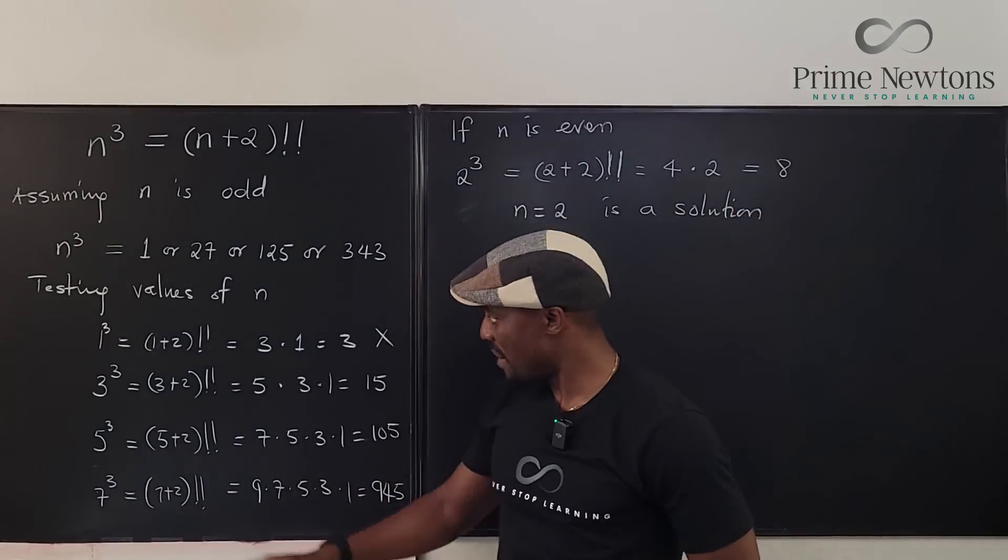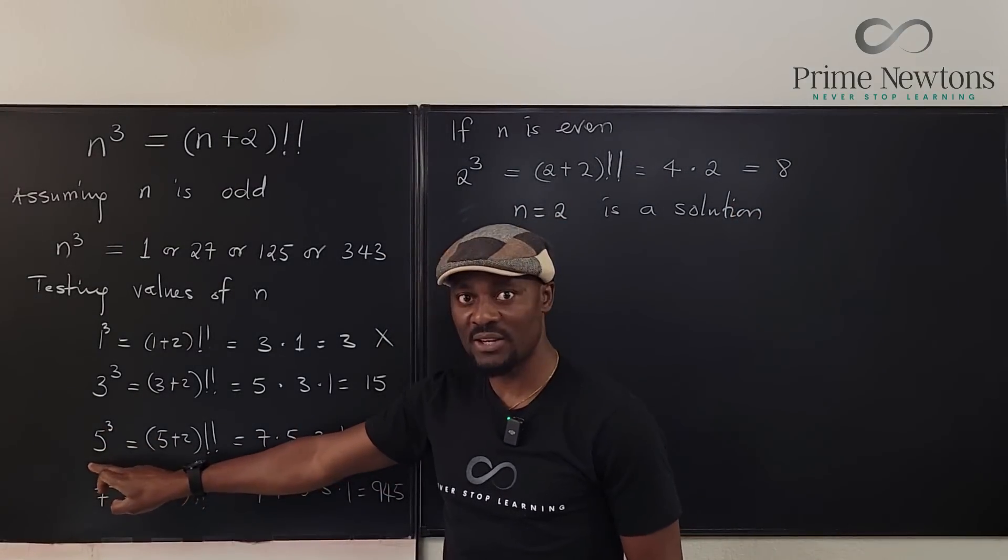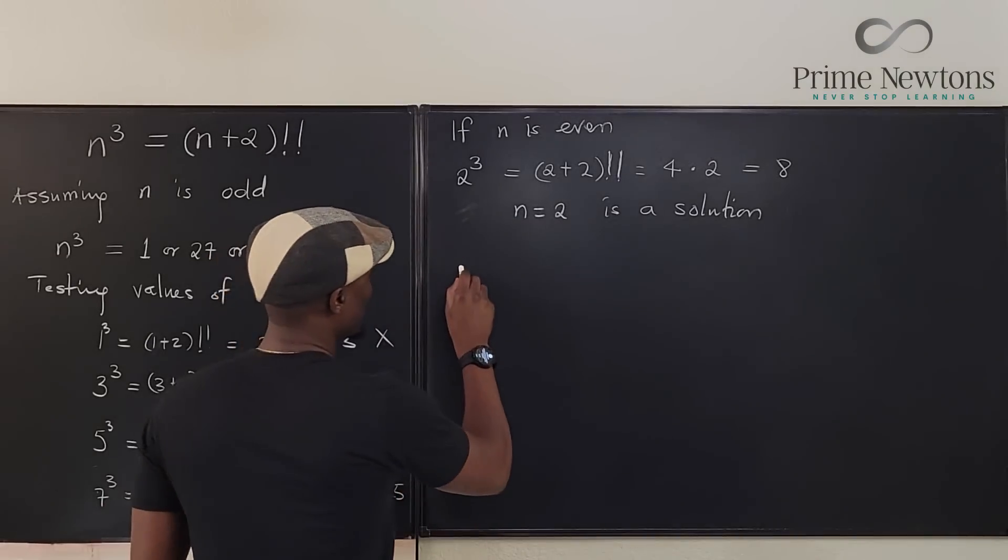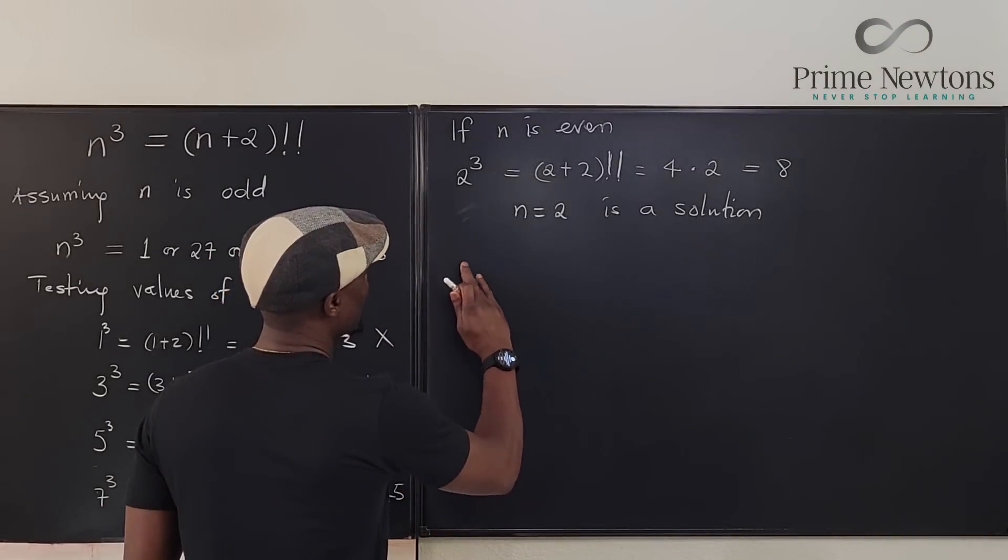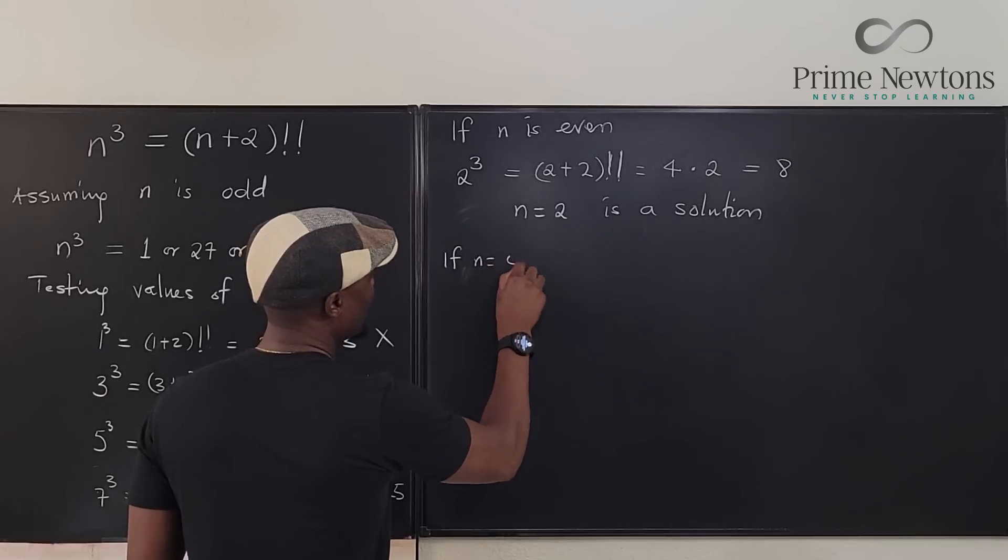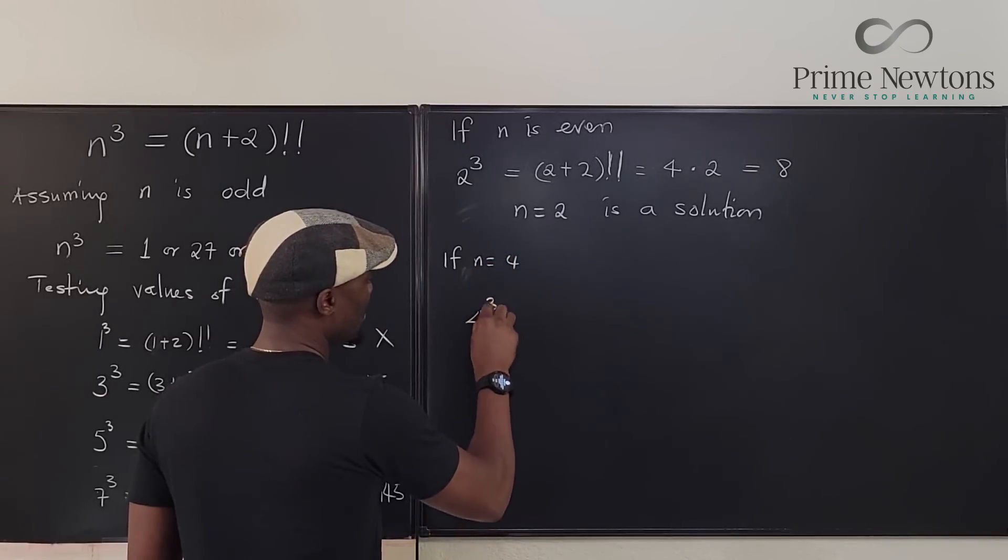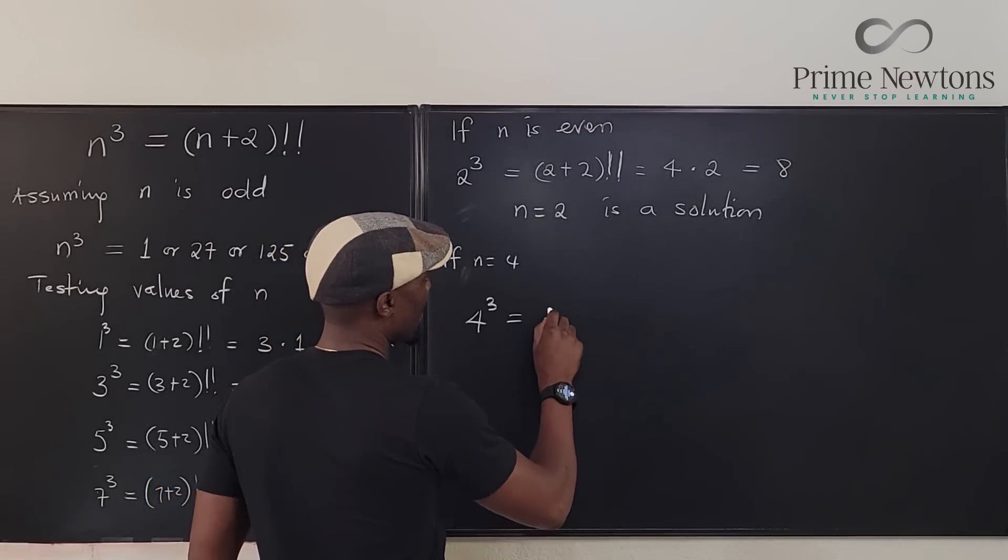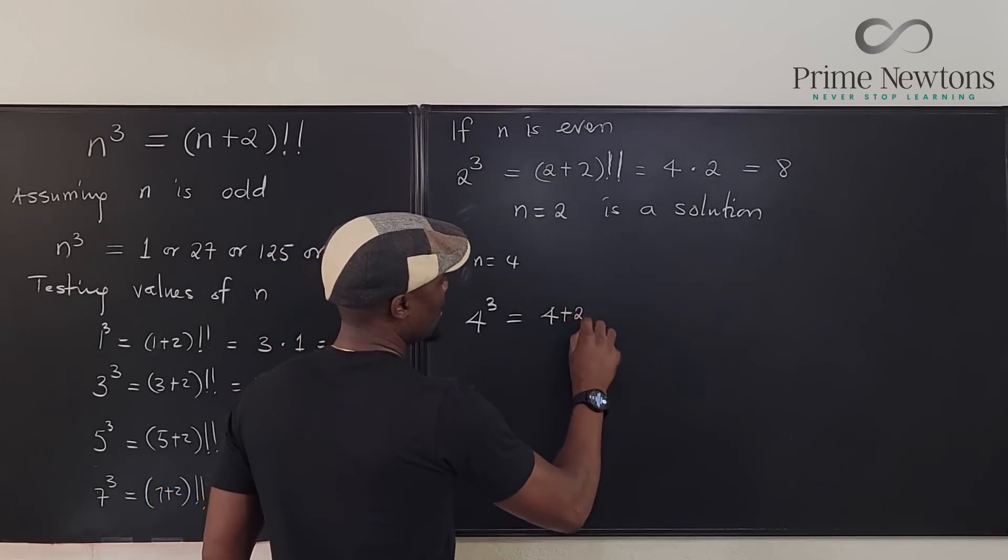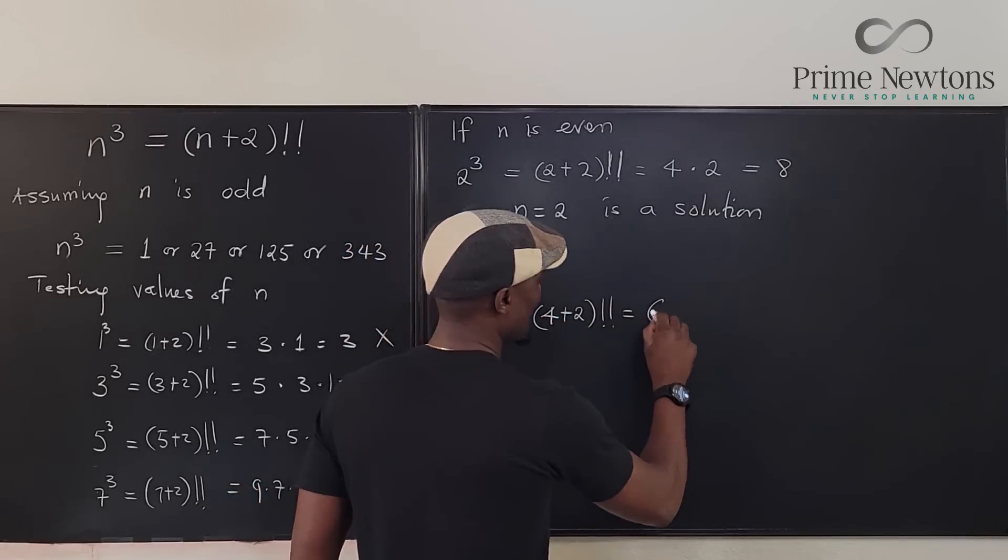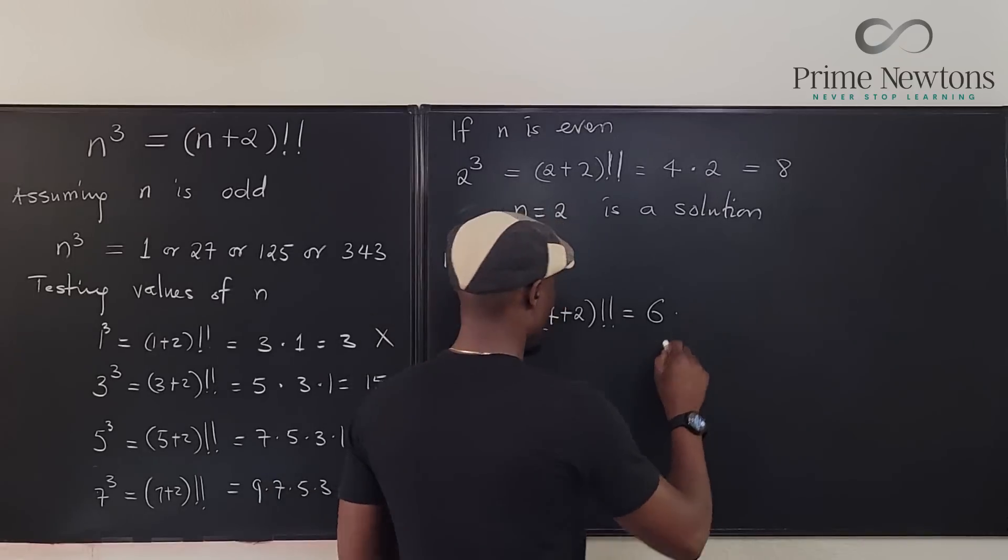Now like I said, remember, there's this suspicion that there's a crossing happening here. Let's go check again. Let's do n equals, if n equals 4. So we say 4 cubed will be equal to, let's do it, it's going to be 4 plus 2 double factorial, which is equal to 6 times, what is it?